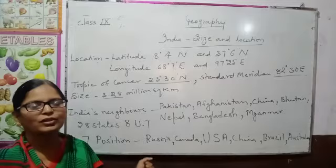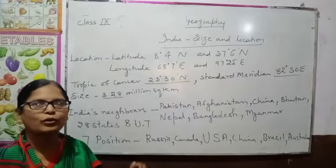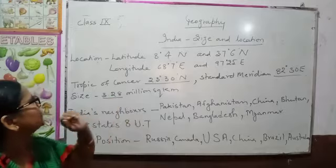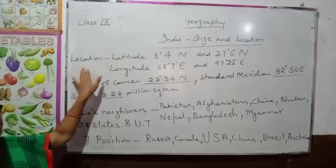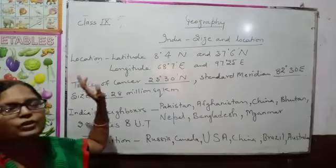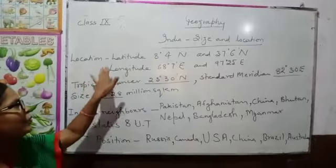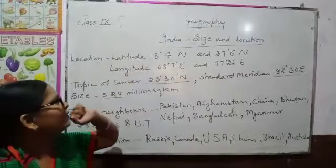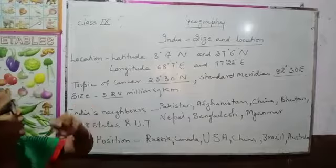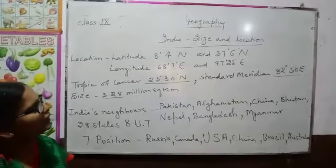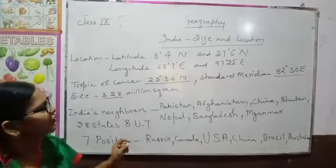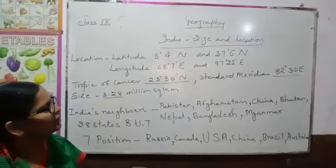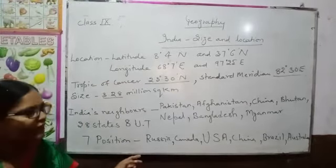So, the size of India — where it stands. First of all, look at the location of India. Latitude and longitude: you will learn from East to West. That is 8 degree 4 North and 37 degree 6 North. Longitude in India: 68 degree 7 East and 97 degree 25 East.